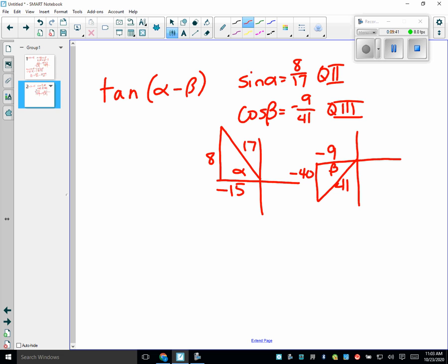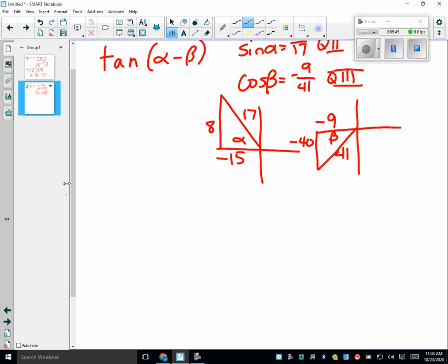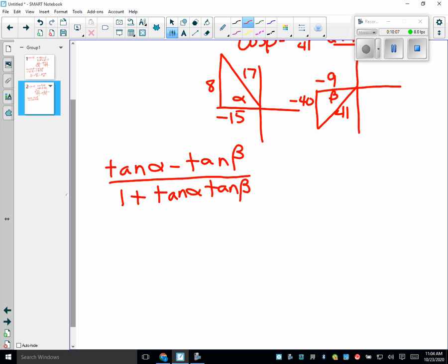Alright, beta is in quadrant 3. What do I know about beta? It's in quadrant 3. Well yeah, but what else do I know? Adjacent is negative 9, hypotenuse is 41. Is it negative 40? Yeah. Okay.